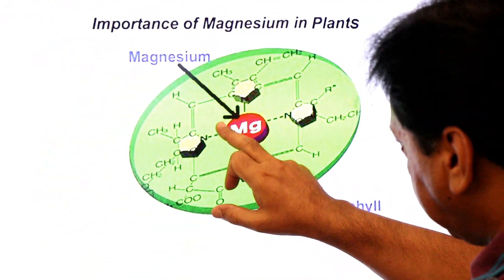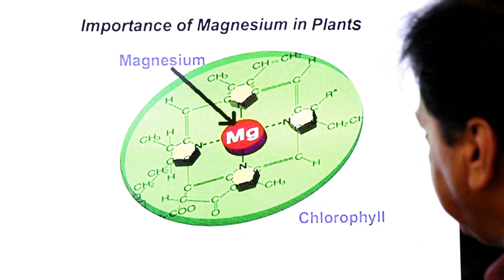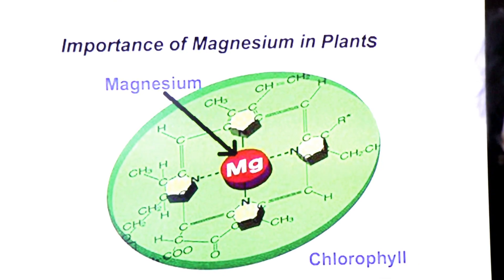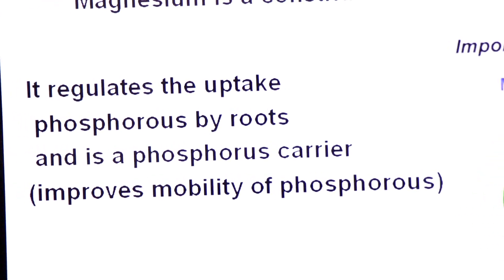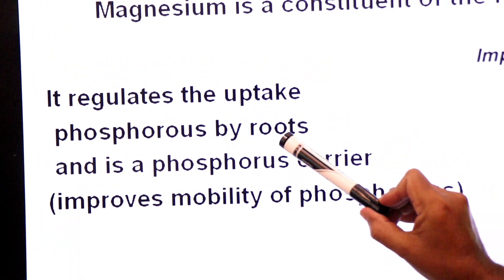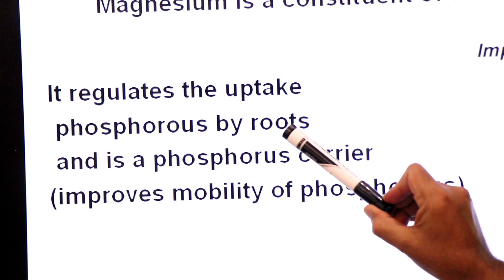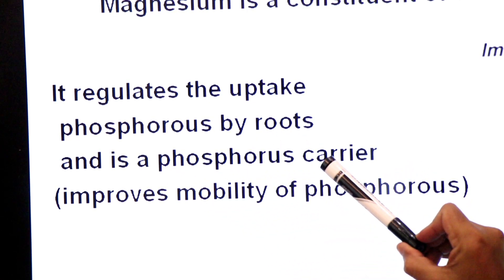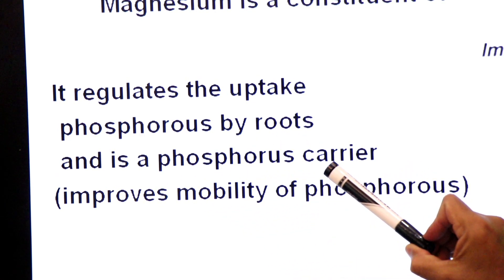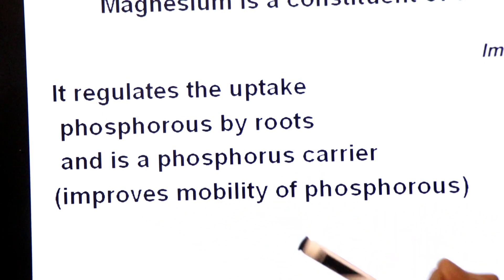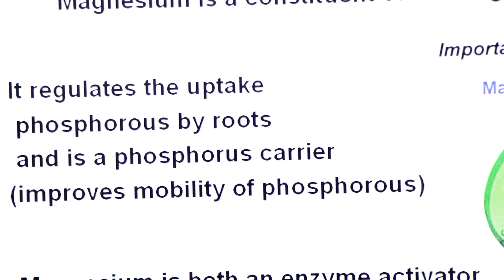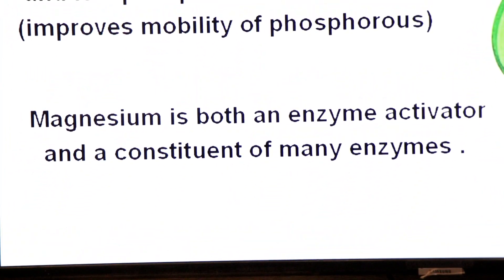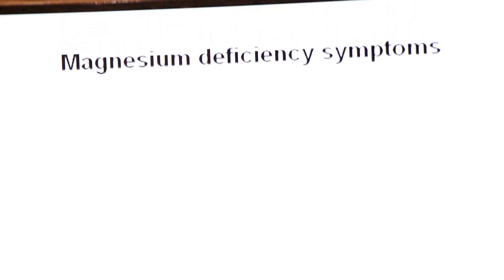Now we come to magnesium. Magnesium ions are present in the center — in the heart — of the chlorophyll molecule. So magnesium is an important component of chlorophyll. Number two, it regulates the uptake of phosphorus by roots — in the presence of magnesium, plant roots absorb phosphorus from the soil. Magnesium acts as a carrier of phosphorus, improving its mobility and movement. Number three, magnesium activates enzymes and is also a component or constituent of many enzymes.